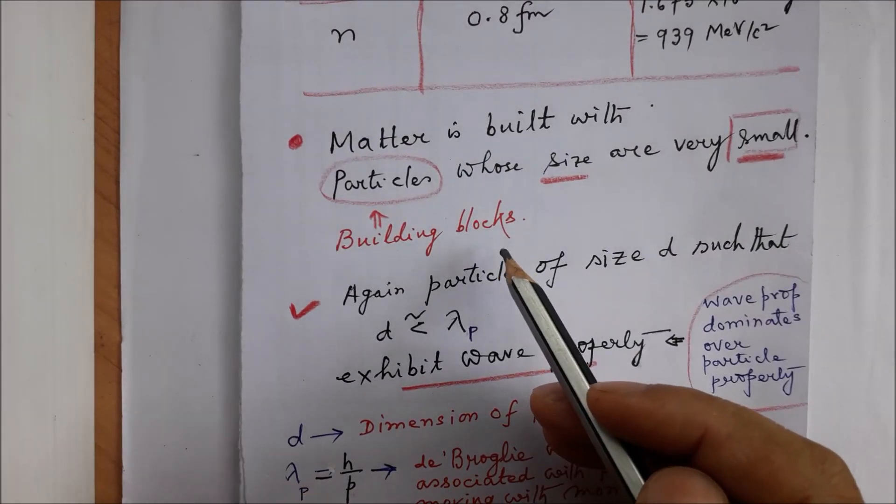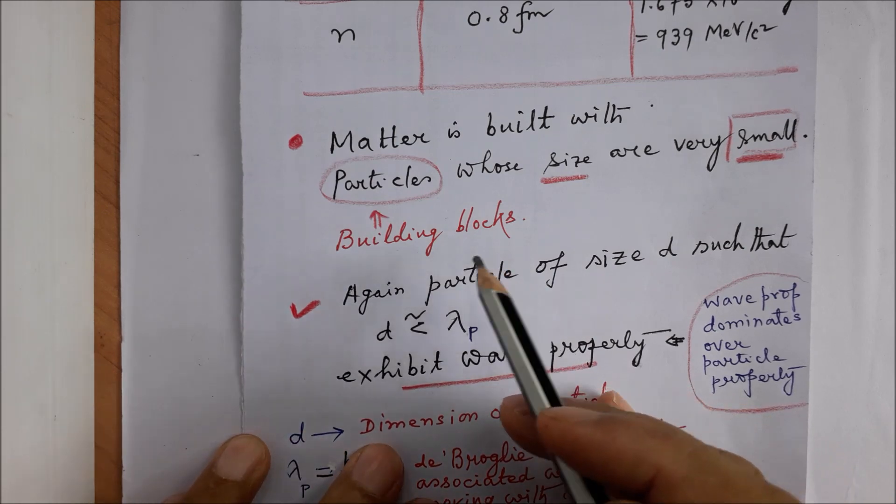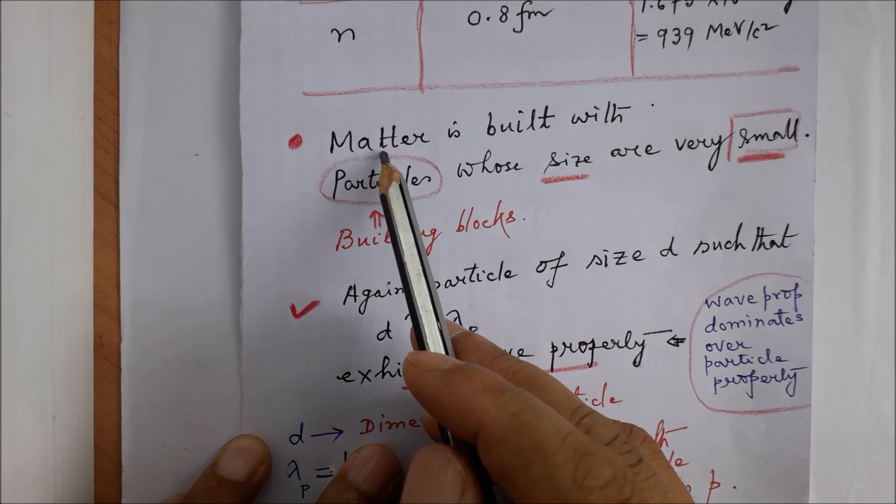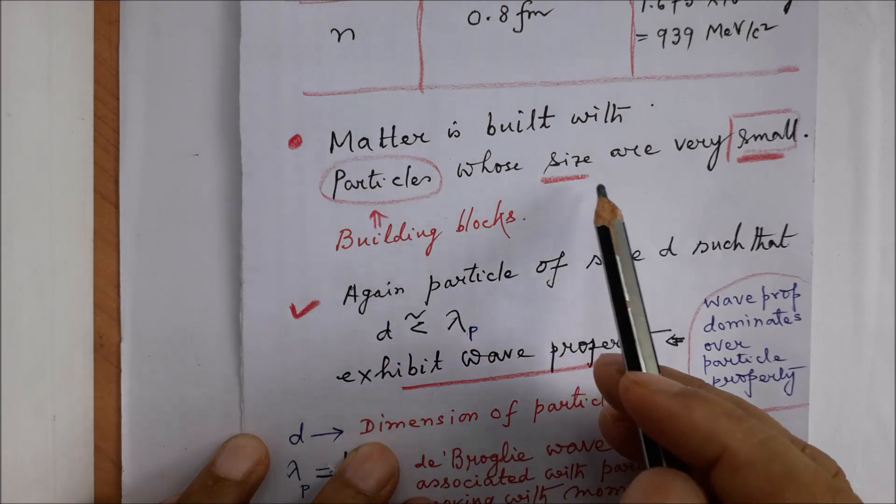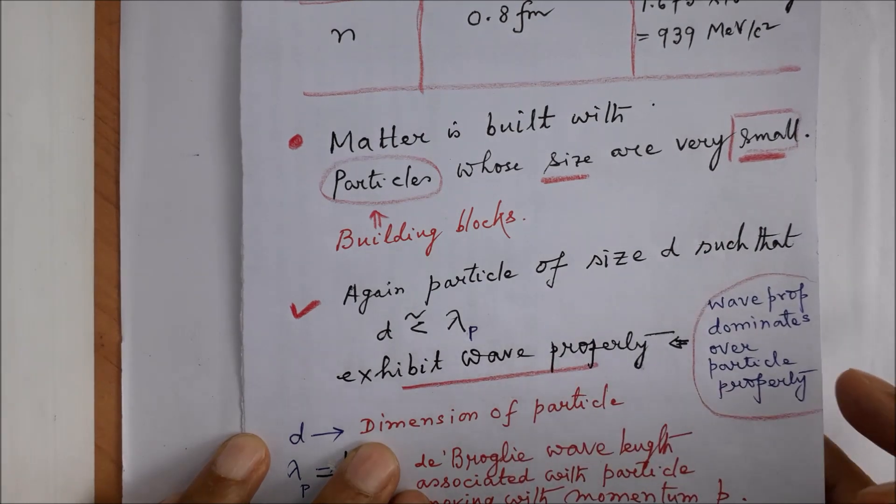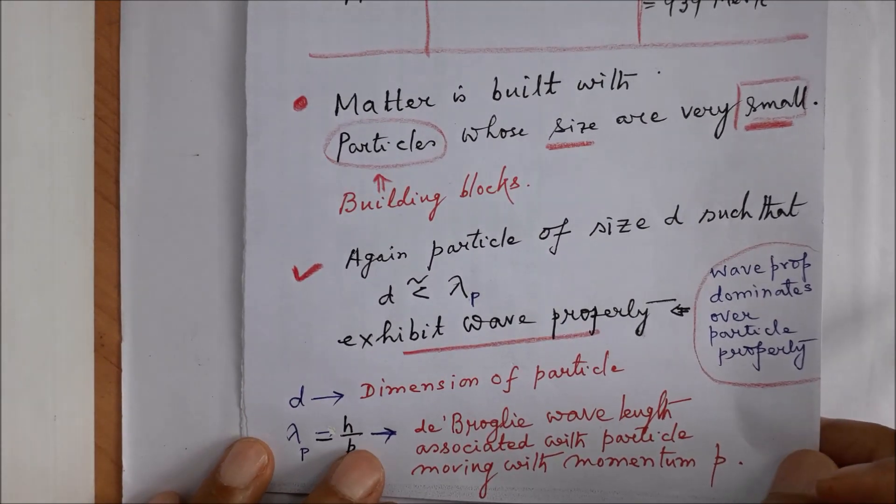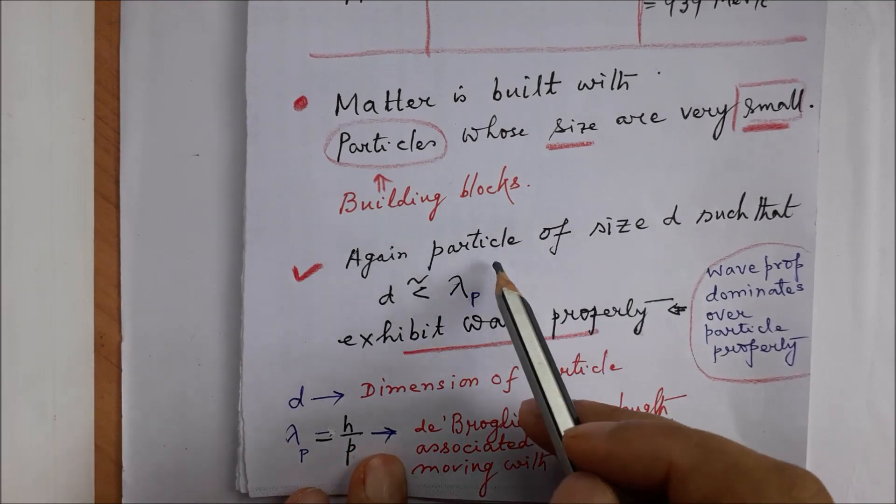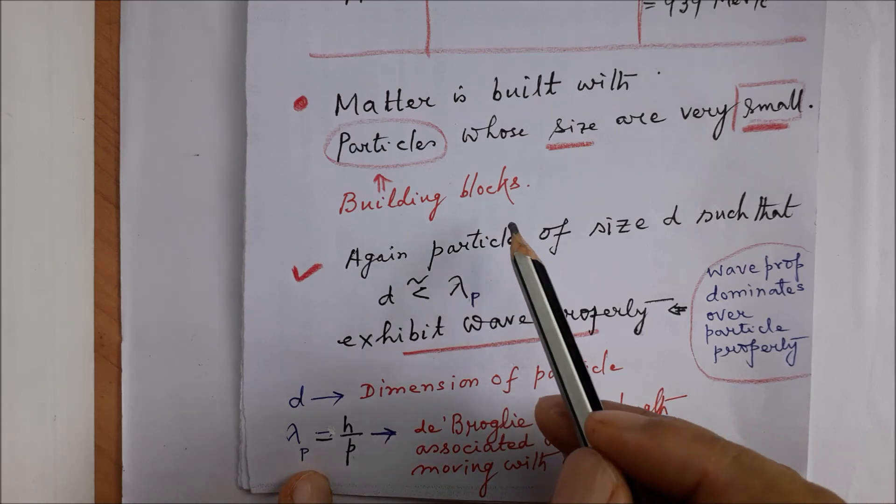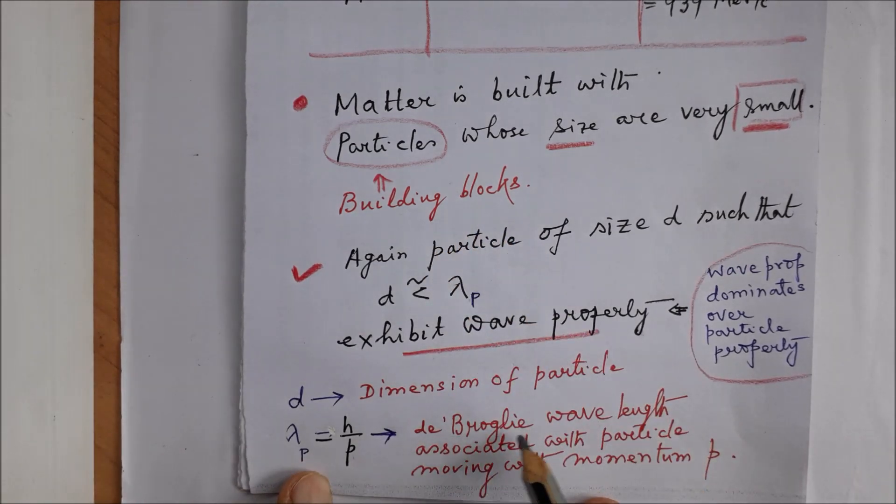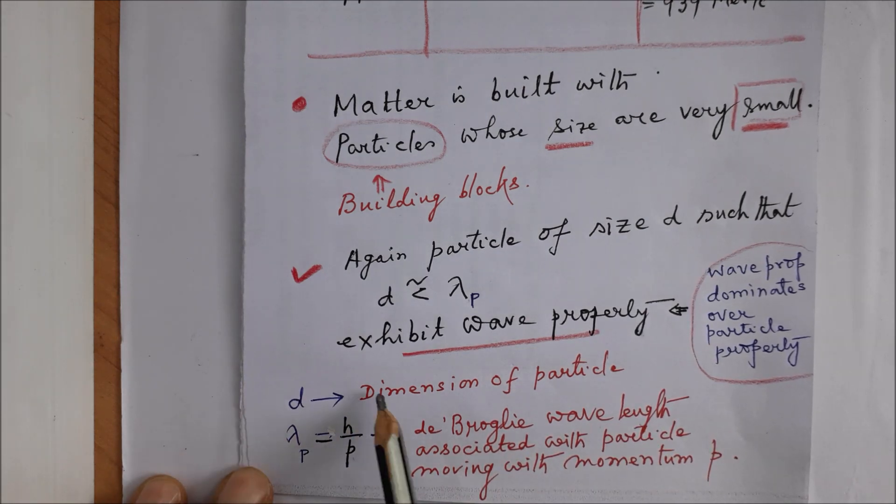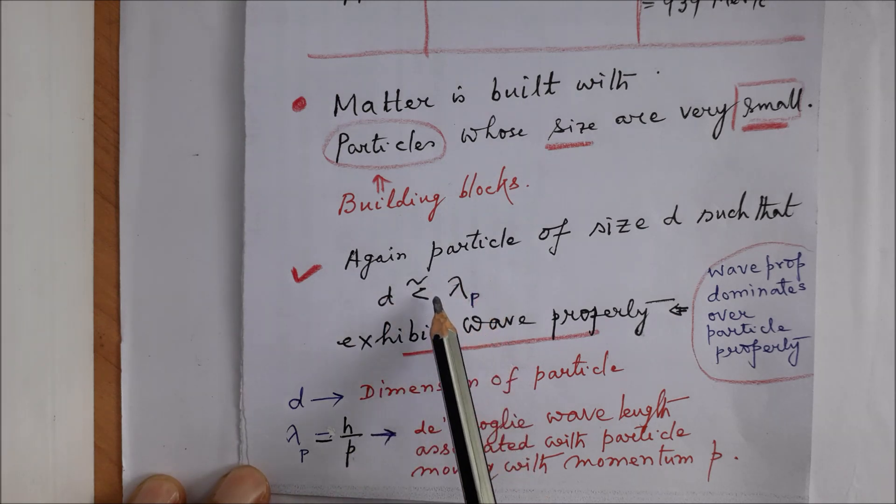The matter is built with particles, and particles which build the matter, which are the building blocks of matter, are very small in size. Again, particle of size d, d representing dimension of the particle, can be compared with its corresponding de Broglie wavelength using this formula. So if λ_p represents the de Broglie wavelength of a particle which is moving with momentum p, then λ_p is given by h/p.